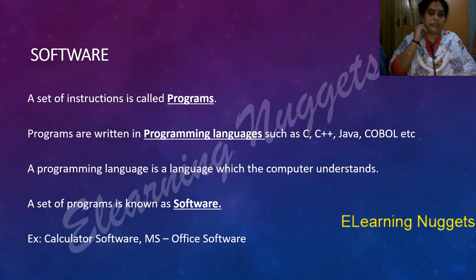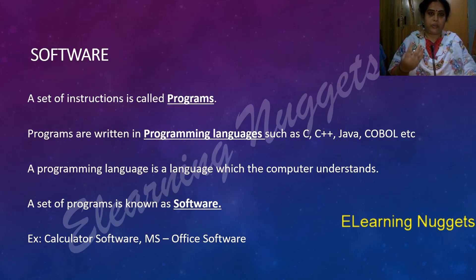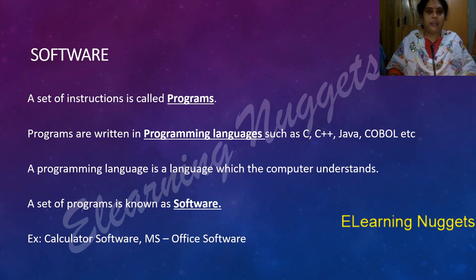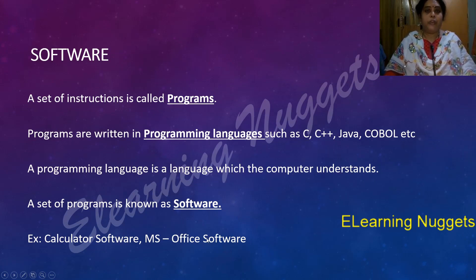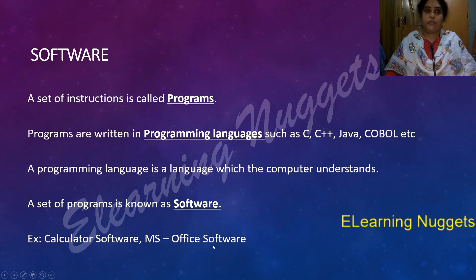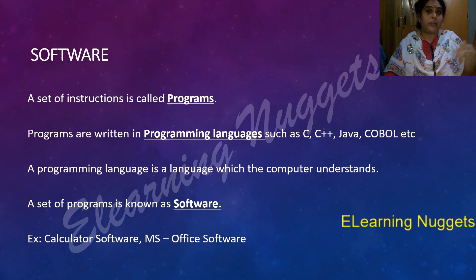For example, if I have a program that does basic arithmetic calculations like addition, subtraction, multiplication, and division, these four programs can be written individually and grouped together and called software. So if I group those four programs, I can name it as calculator software. You also have MS Office software — most of you are aware of it. MS Office contains MS Word, MS Excel, MS Access, and MS Outlook. MS Office is known as a package suite because it contains all software related to office work.